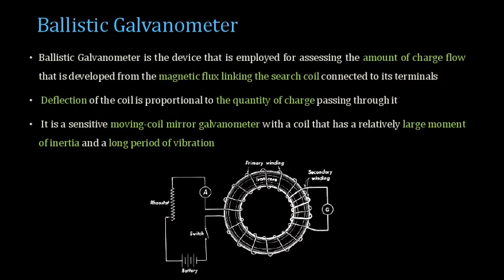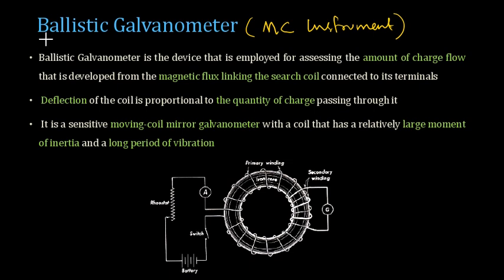As the name indicates, this is a galvanometer. A galvanometer can be thought of as something like a moving coil instrument, and here also the working principle is very similar to a moving coil instrument, but with slight variations. This ballistic galvanometer is used to assess the amount of charge flow that is developed in a magnetic circuit due to the flux linking with the surge coil connected to its terminals.